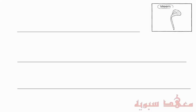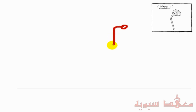The next letter is the Meem. To write it, we start from about here, come around like a loop, and then come around like that. So to do that again: come around and like that.